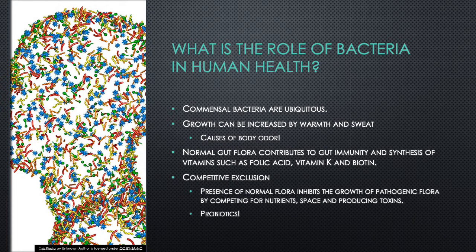Gut bacteria also protect you from pathogenic bacteria — or from your own normal flora becoming pathogenic — through competitive exclusion. This means they outcompete other organisms by taking up space, consuming nutrients, and producing toxins against invaders. A classic example is in the female vagina, where Lactobacillus acidophilus maintains balance and prevents Gardnerella vaginalis from causing bacterial vaginosis. When Lactobacillus populations are depleted due to antimicrobial therapy or other factors, Gardnerella can take over and cause disease.